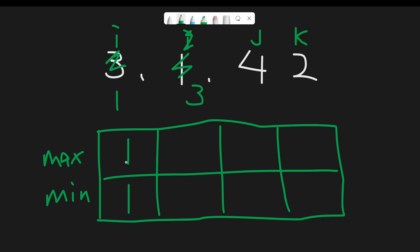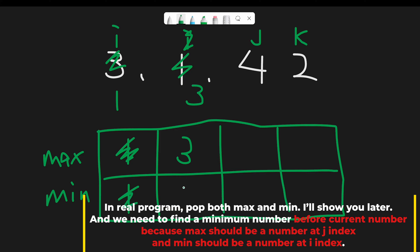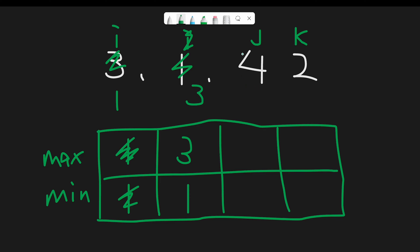We also calculate the minimum number so far — which is 1. Moving next, we find 3. Since 3 is greater than the current max, we pop 1 from the stack and add 3 to the stack. We also update the current minimum so far. Among the numbers found — 1 and 3 — 1 is still the smallest, so we keep 1 as the minimum.